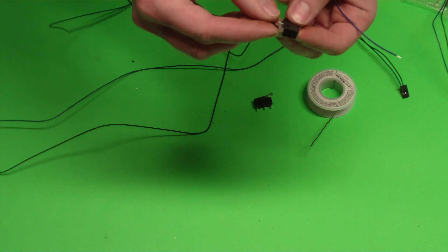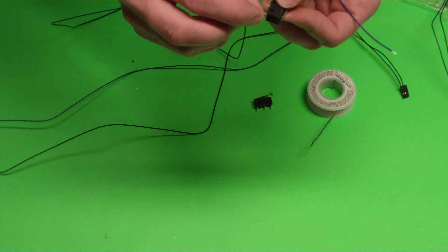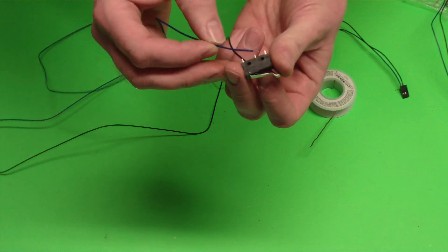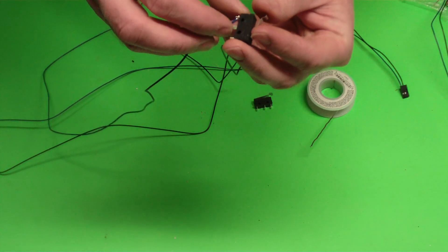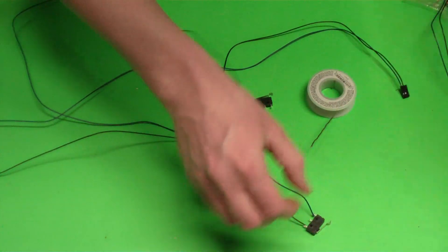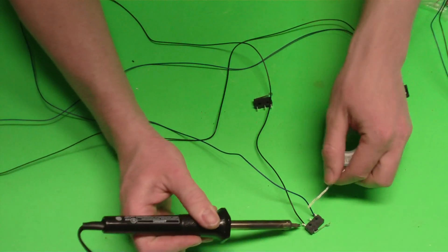So the black goes on C, the blue goes on NC, and just a little solder to keep them in place.